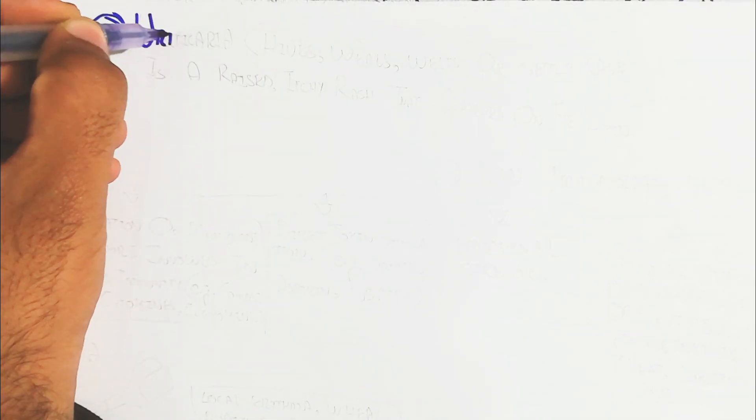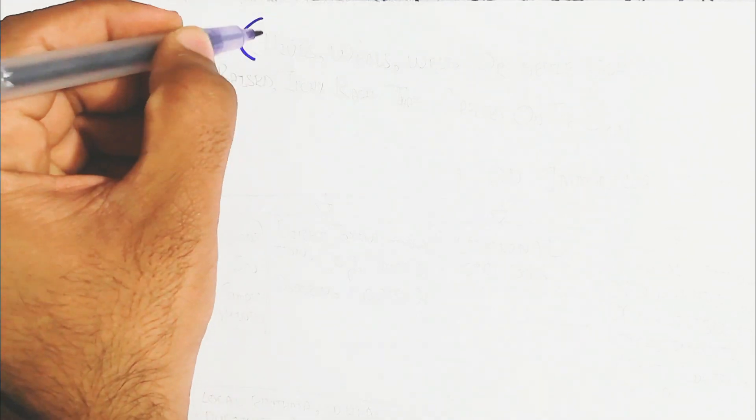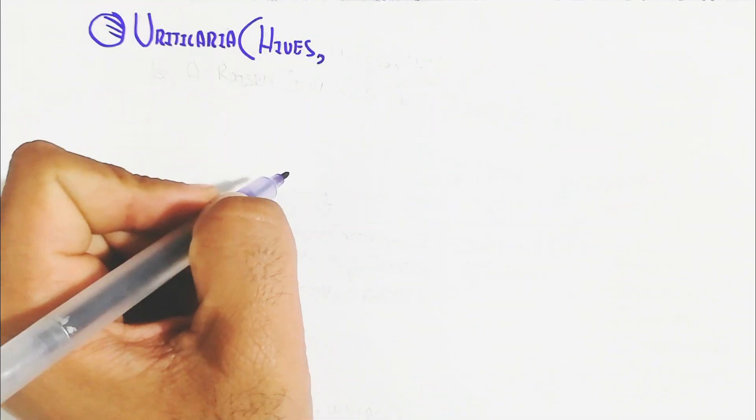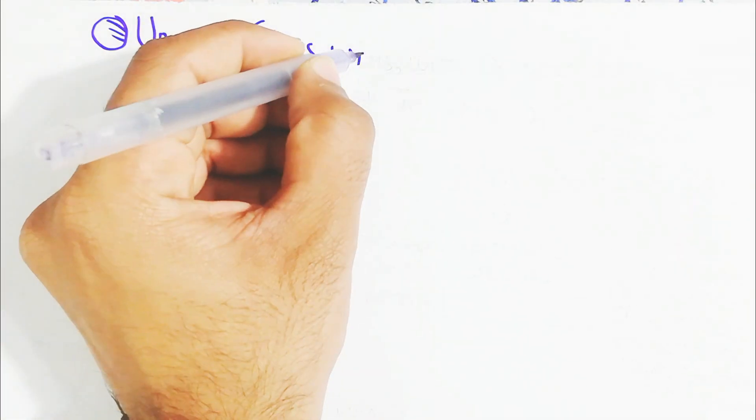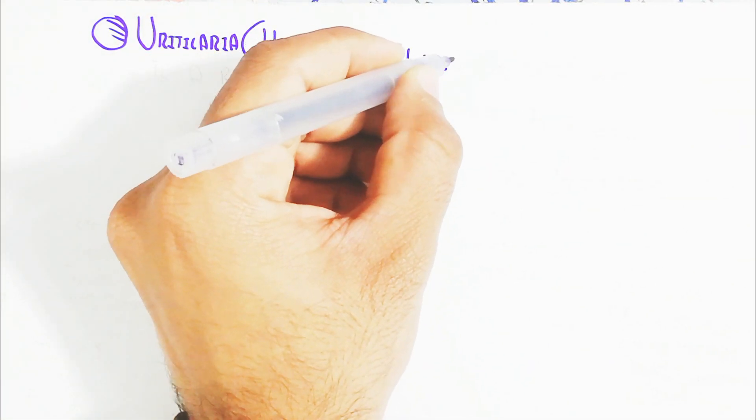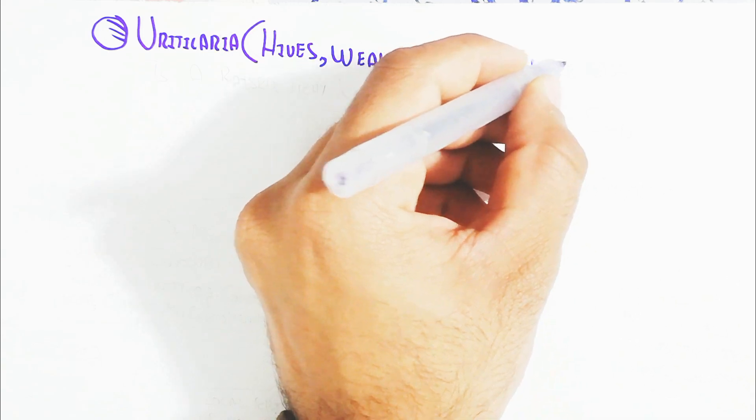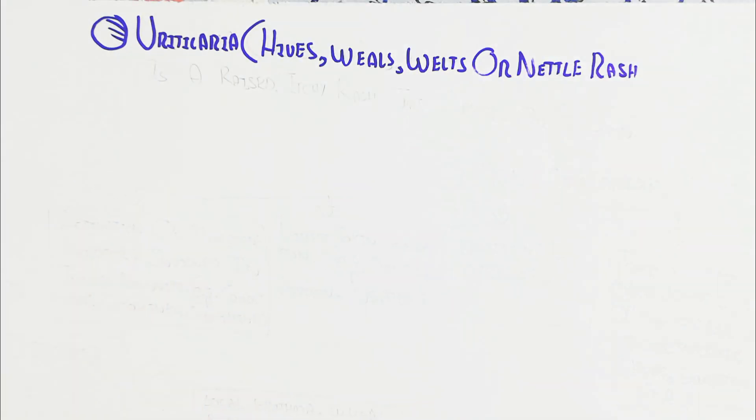Hello, in this video we will understand urticaria. This is the hives, wheels, welts, or natural rash - a raised, itchy rash that appears on the skin.